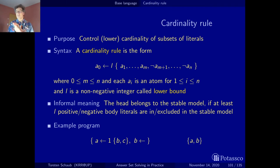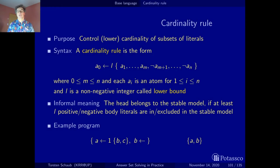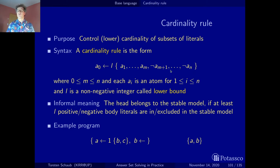Now let's give semantics. The informal intuition must be made precise via translation. To apply a cardinality rule, we must count how many members of the body set are satisfied by the current stable model candidate. Once we have that count, we compare it with the lower bound. So counting and comparison are the central operations underlying this language construct.